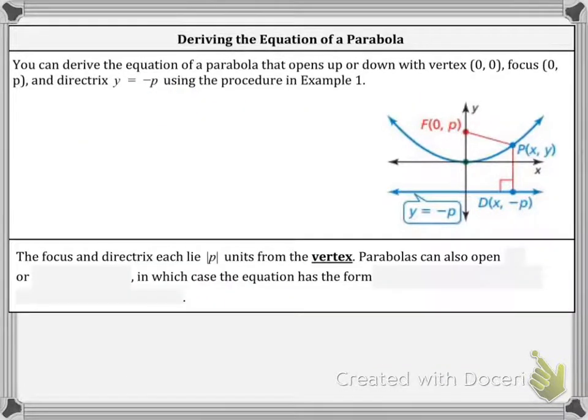And so to summarize, after all of that, I know we used the distance formula before to solve it, so we don't need it anymore. Now we just have the formula Y equals 1 over 4P X squared.